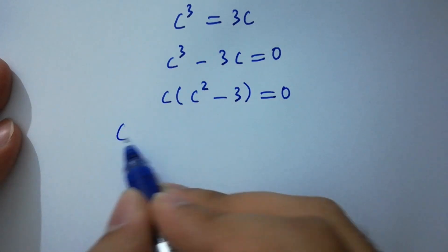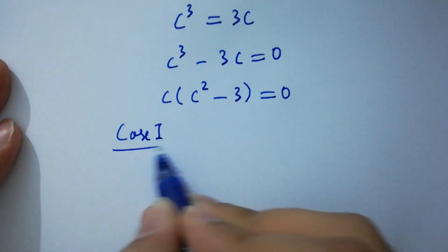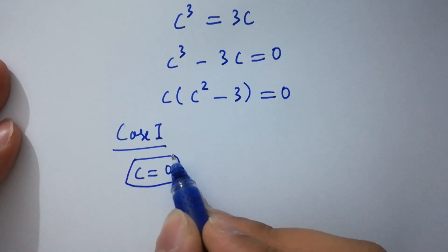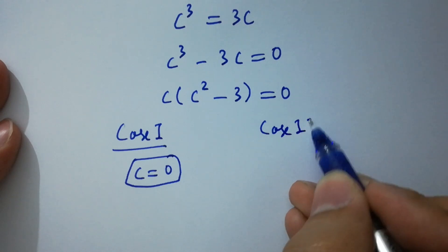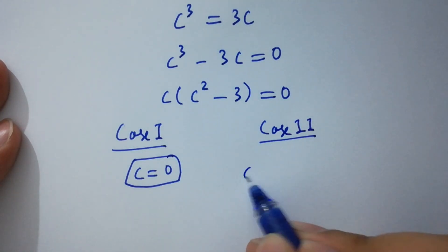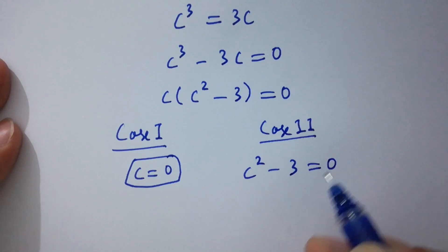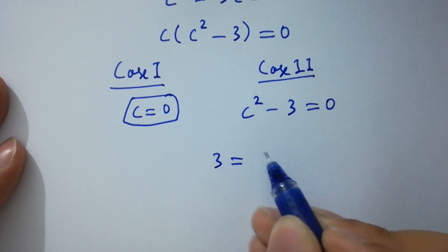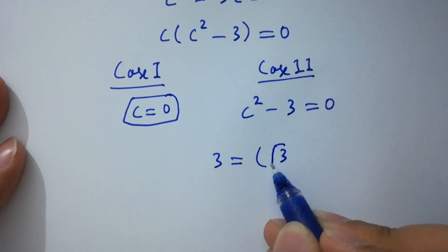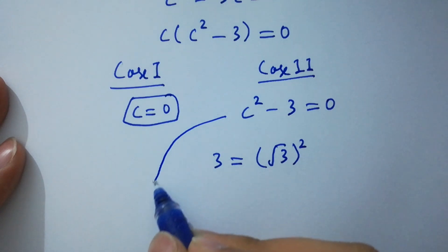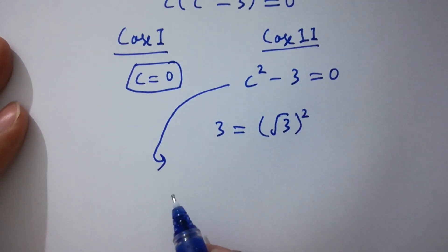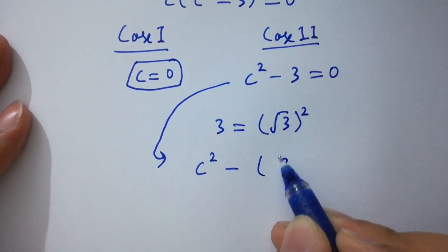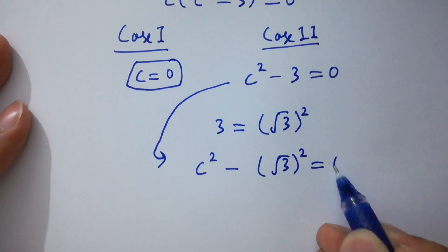We have 2 cases here. Case 1: c equal to 0. The second case is c squared minus 3 equal to 0. Since 3 equals square root of 3 squared, it can be written as c squared minus (square root of 3) squared equal to 0.